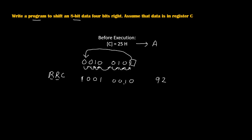After the first rotation our value became 92H. We will rotate one more time using RRC. We are rotating again because we need to rotate 4 times total towards the right. RRC stands for Rotate Accumulator Right Without Carry.